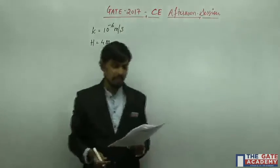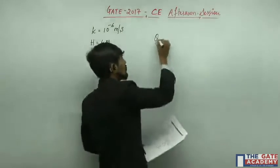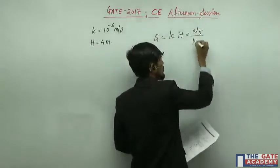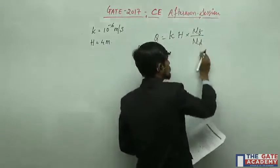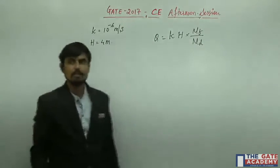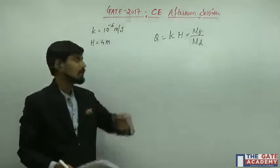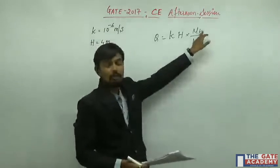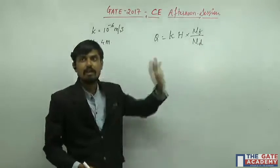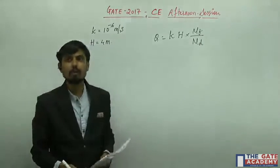Most students make a mistake in reading this question. The formula for seepage is q equals k into h into Nf divided by Nd, where Nf represents the number of flow channels and Nd represents the number of potential drops. However, the question has not given the number of flow channels or potential drops directly — it has given the number of equipotential lines and the number of flow lines instead.